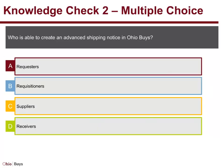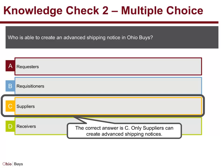Knowledge Check 2. Multiple Choice: Who is able to create an Advanced Shipping Notice in OhioBuys? The correct answer is C. Only Suppliers can create Advanced Shipping Notices.